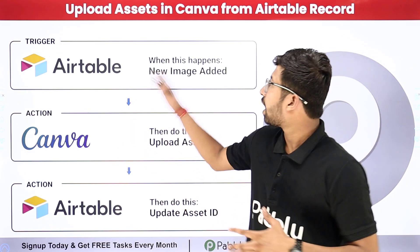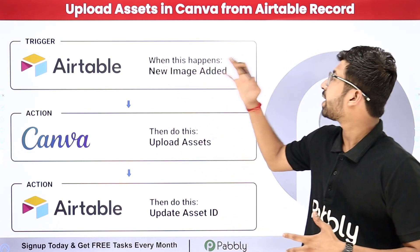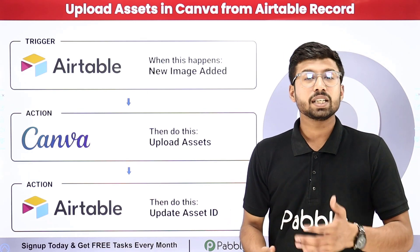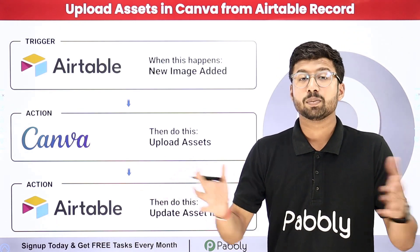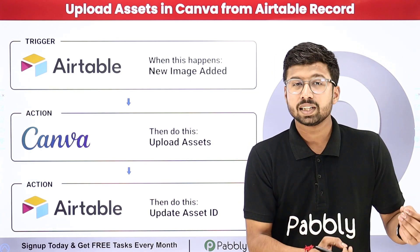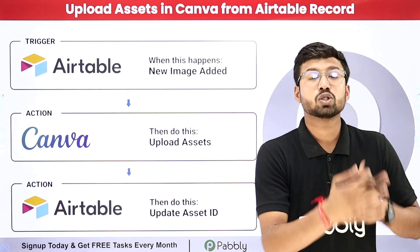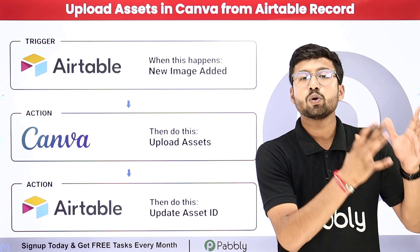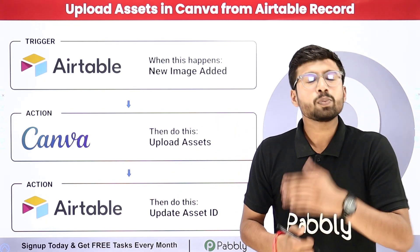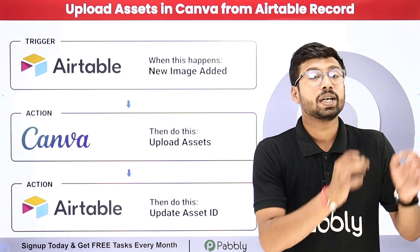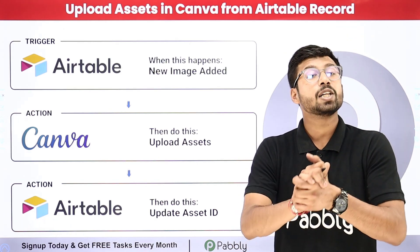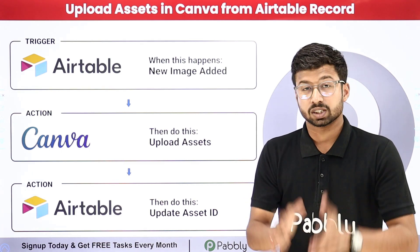In this video we are going to learn how to automatically upload assets in Canva from a table record. If you're getting multiple images from multiple sources and adding all of those images with some file name in a table database to manage your data, and you want to upload these images as assets in your Canva account, the manual process of uploading each image is very repetitive and time-consuming. You can completely automate this process.